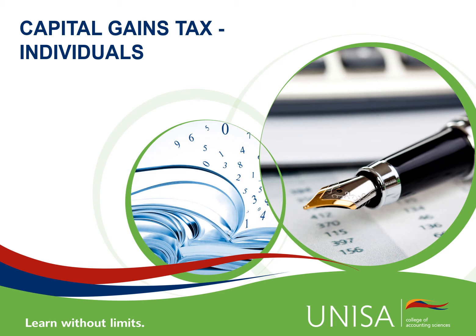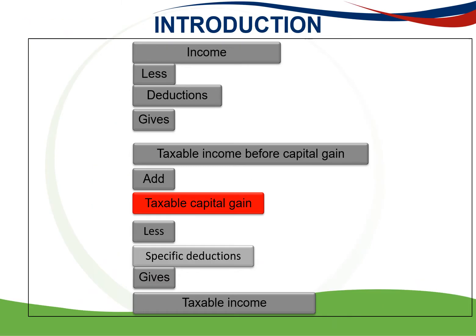Capital Gains Tax for Individuals. Here we have the tax framework again. It starts off with income, which is gross income, less exempt income, and then deductions are deducted. Those are general and other deductions, and then you get your taxable income before the capital gain. Here you insert your taxable capital gain, if there is any, and it must be inserted in the correct order. Then after that you deduct specific deductions, which are the retirement fund contributions and donations, and that gives you your taxable income.